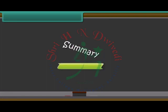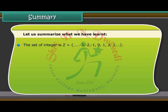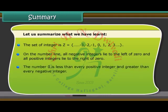Summary. Let us summarize what we have learned. The set of integer is Z which is equal to minus 3, minus 2, minus 1, 0, 1, 2, 3. On the number line, all negative integers lie to the left of 0 and all positive integers lie to the right of 0. The number 0 is less than every positive integer and greater than every negative integer.